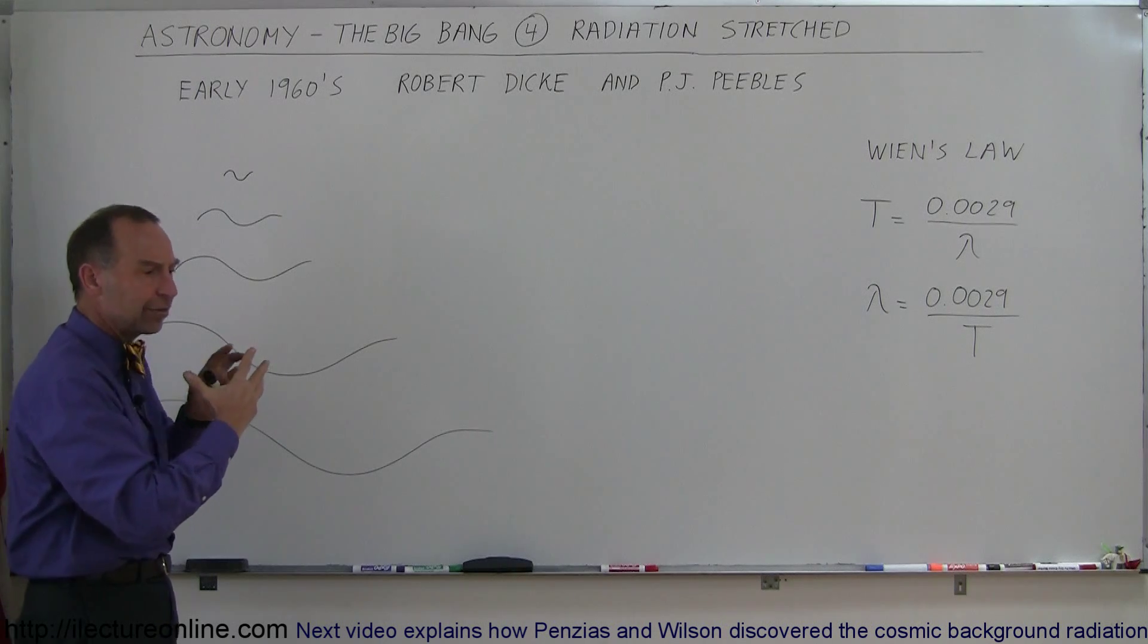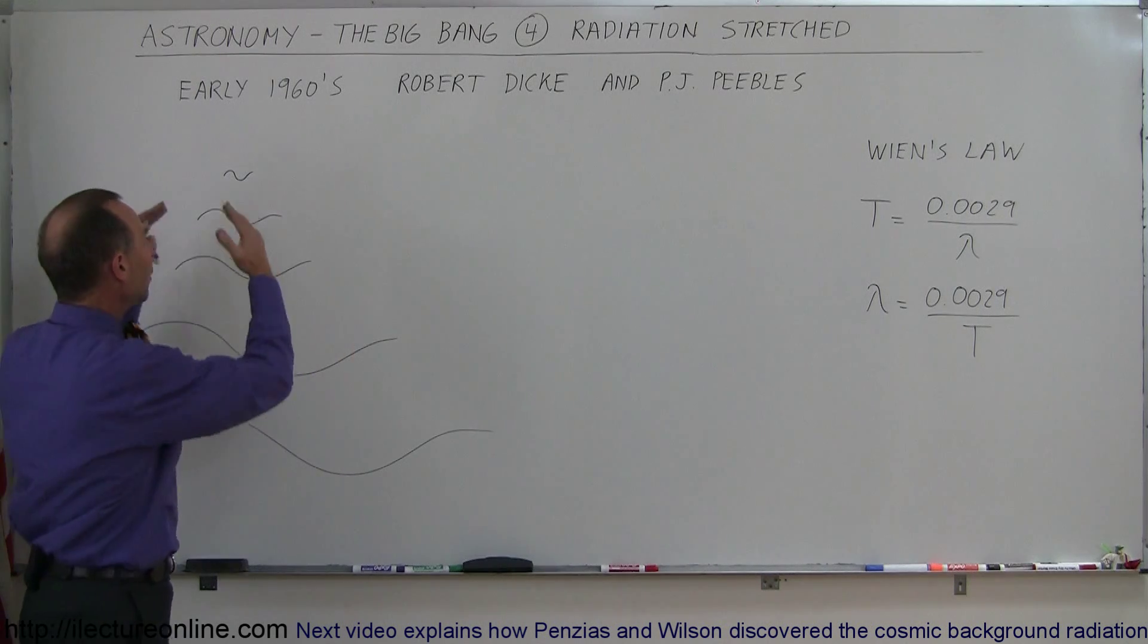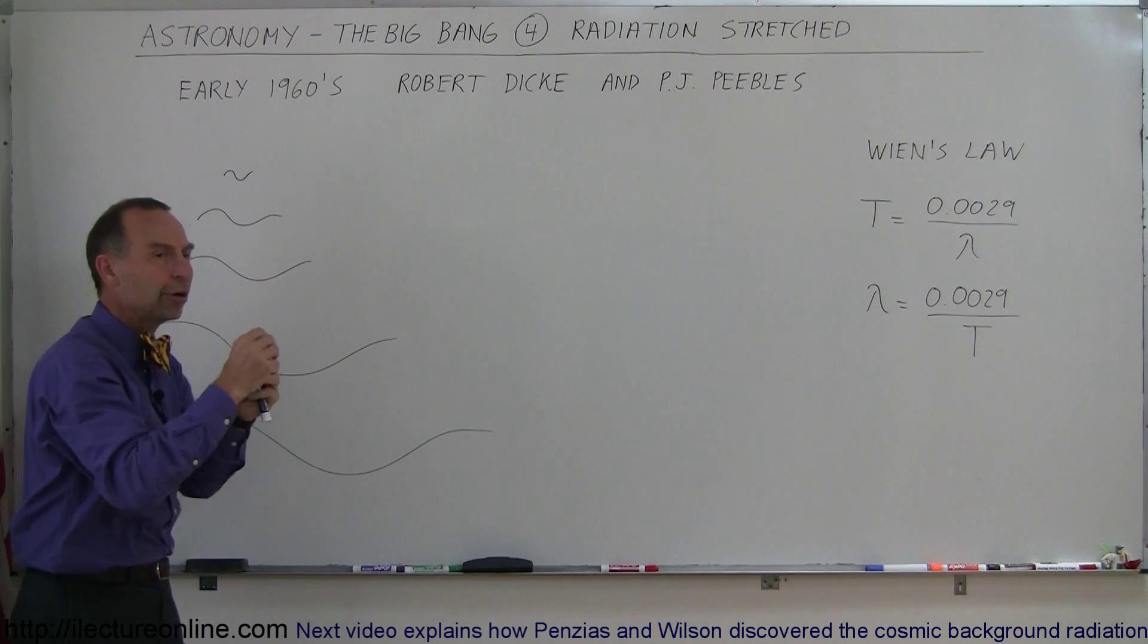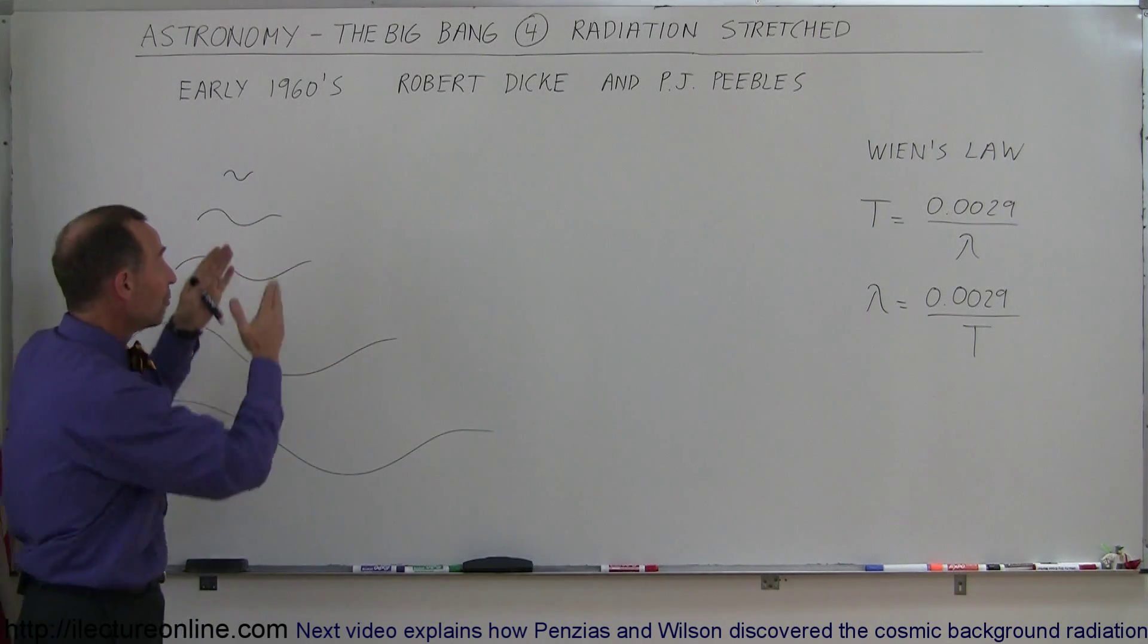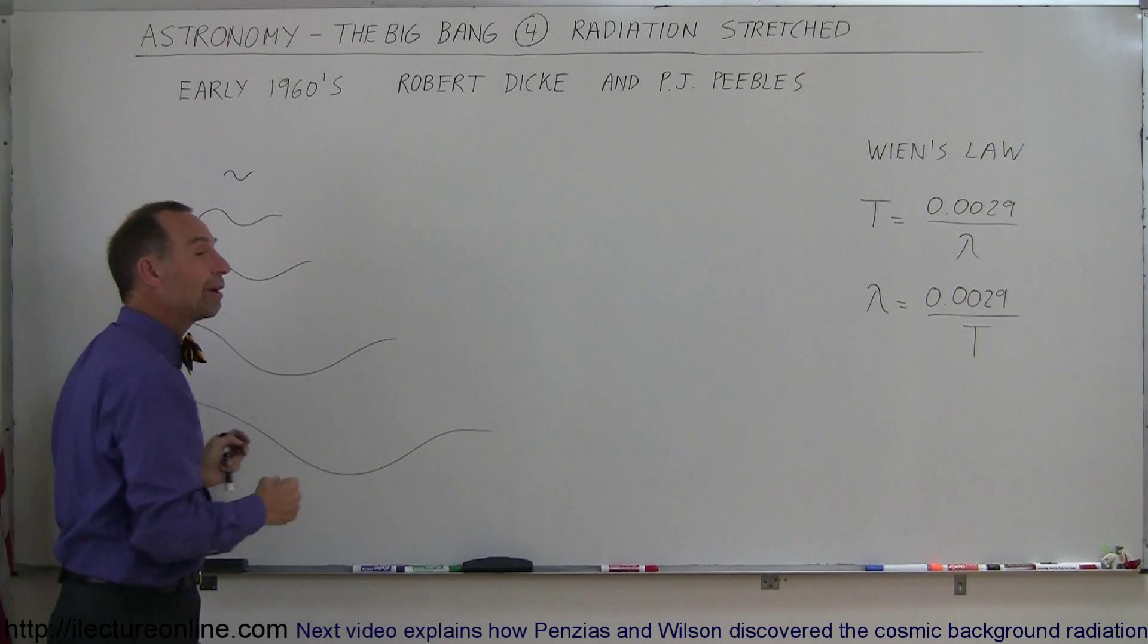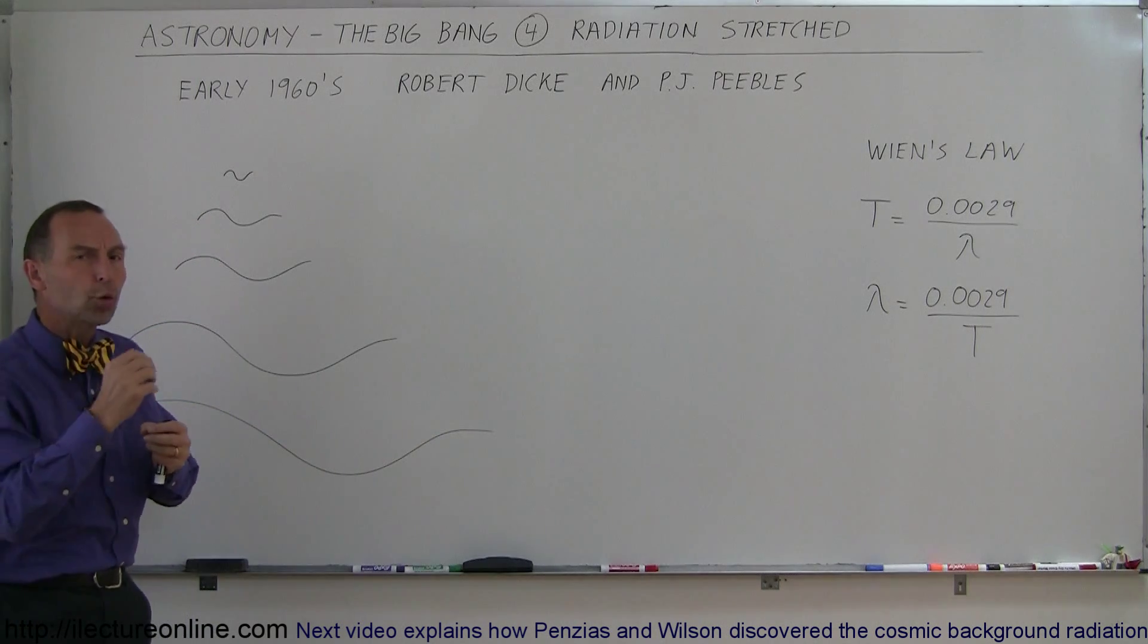And since we now realize that the universe is expanding, that radiation that must have existed in the very early stages of the universe, when the universe was really hot, must have been expanded to a much longer wavelength today, representing much cooler temperatures today.